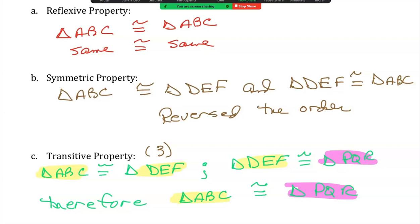So if A is congruent to B and B is congruent to C, then A is congruent to C. That ends that one.